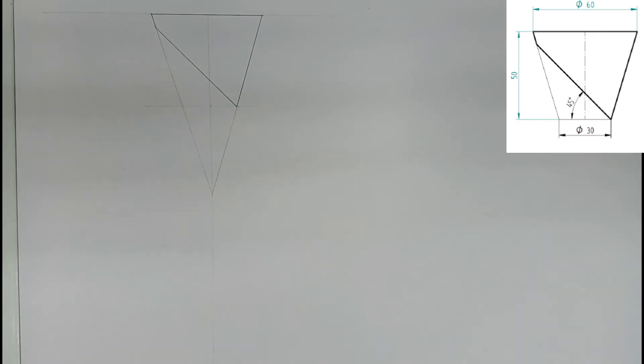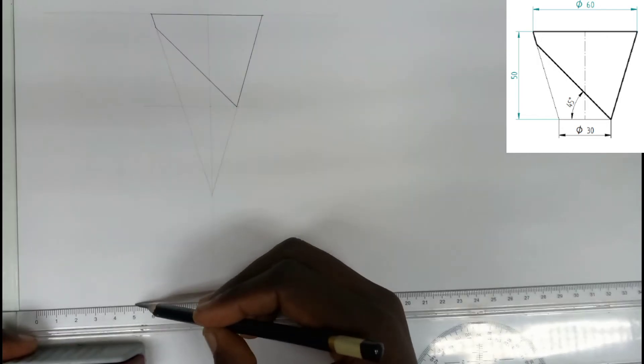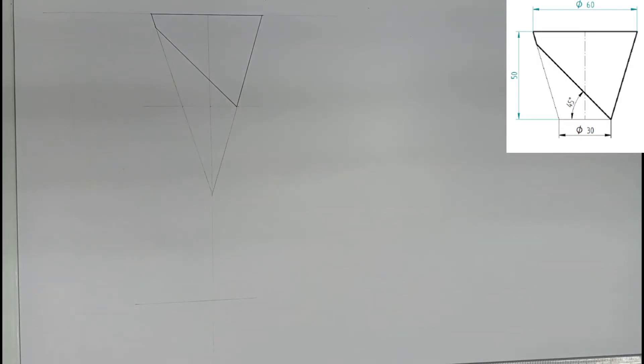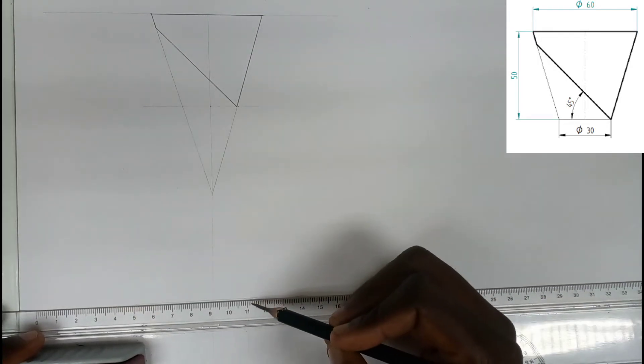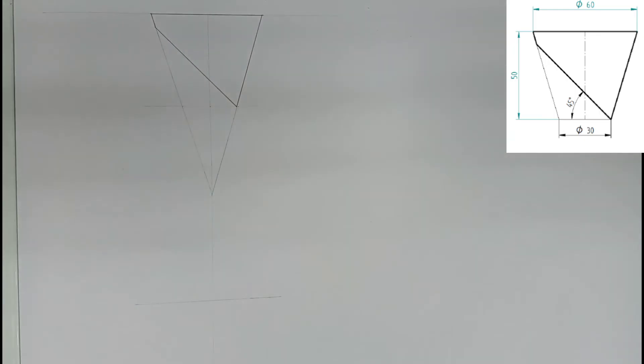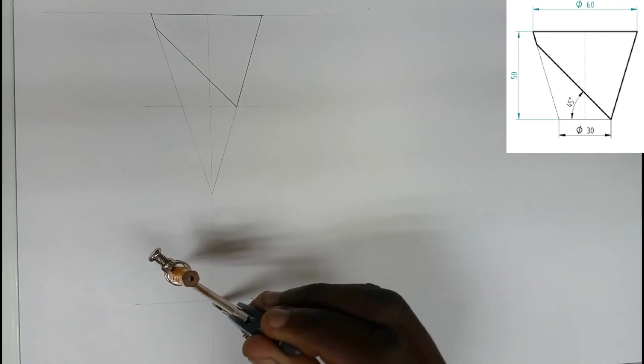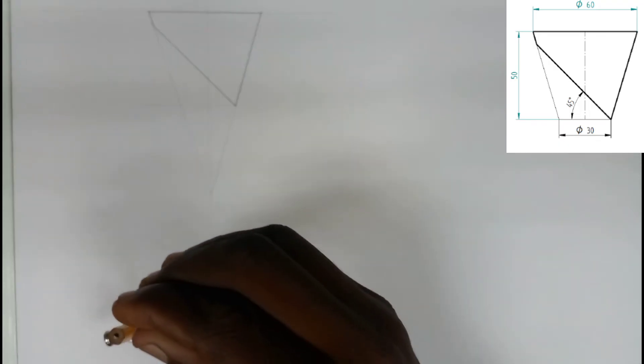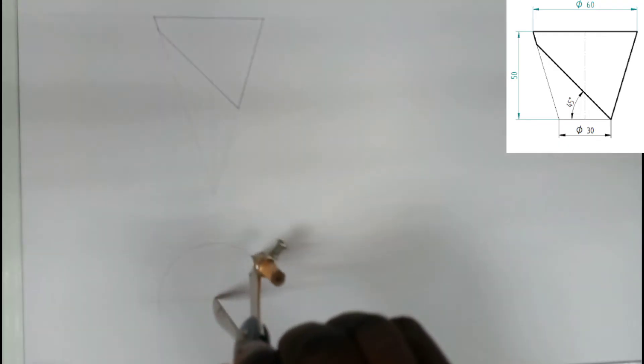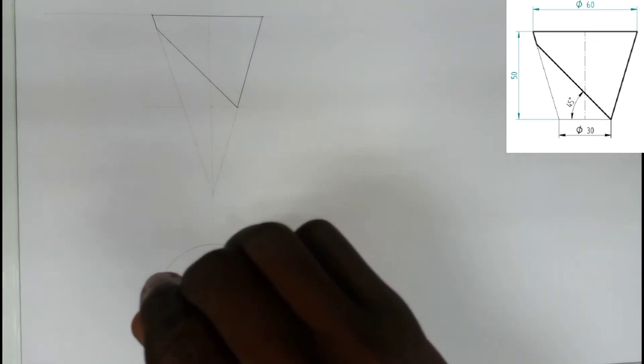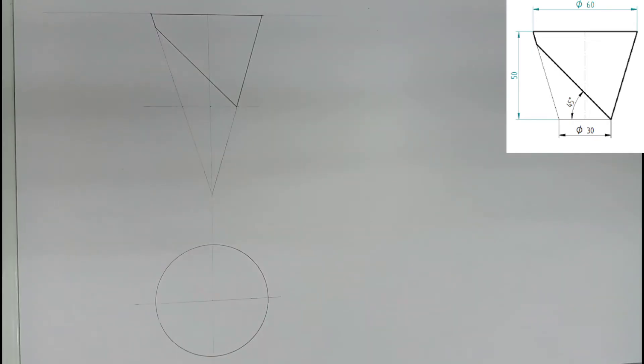This one has a radius of 30, so I have to draw a circle with a radius of 30. Then after doing that, I am going to divide this circle into 12 equal parts.